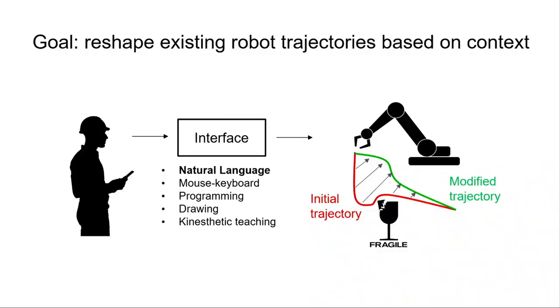The main goal was reshaping existing trajectories based on user-informed context. There are many problems where we're not just trying to go from point A to point B, but also obey contextual constraints from a human. There are many types of interfaces for human-robot communication: natural language, mouse-keyboard, directly programming weights and cost functions, making drawings on an iPad, or kinesthetic teaching where you physically hold the robot and show the desired path.